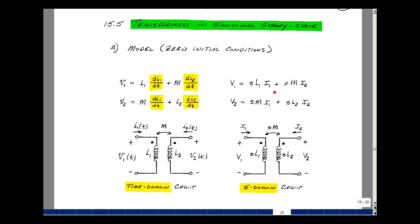So we can have an S-domain equivalent of our time domain, assuming zero initial conditions. And again, we could label this as our V1 and V2 as S-domain voltages, and likewise I1 and I2. We're using uppercase letters and uppercase subscript. And then our mutual inductance here would be S times M.